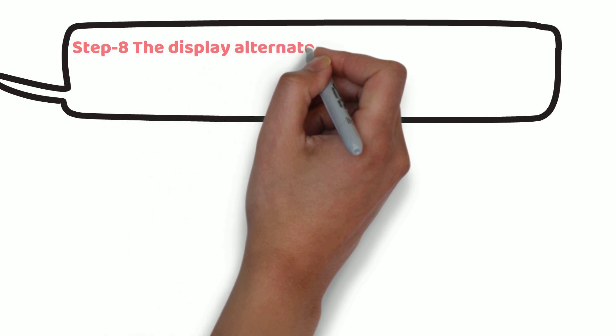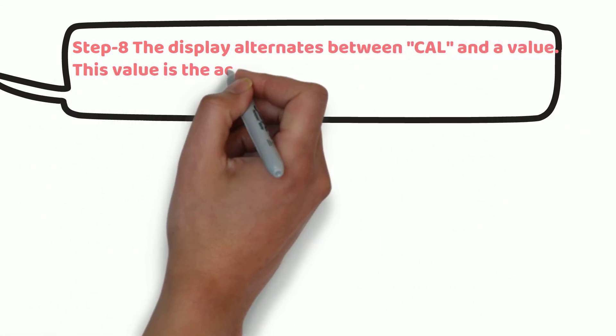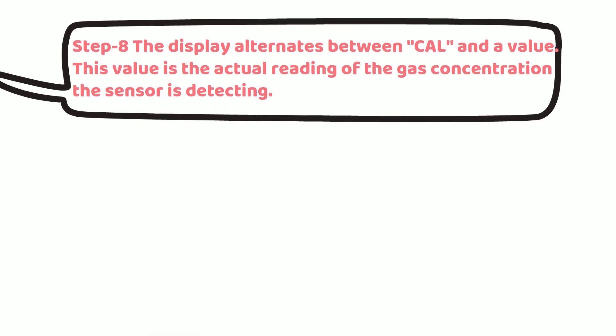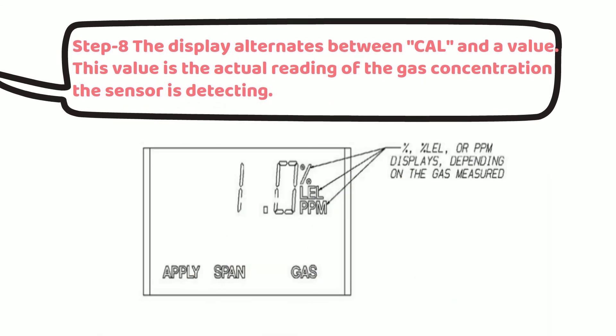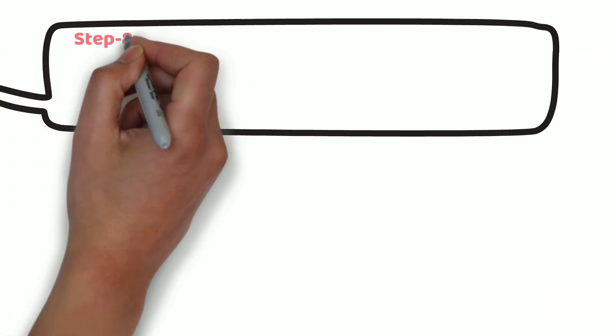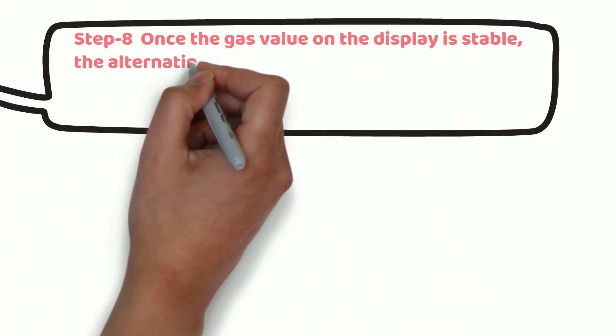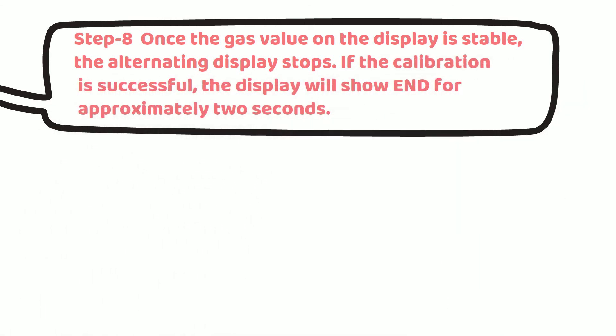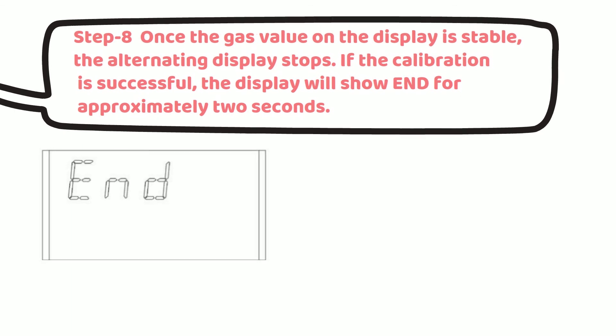The display alternates between cal and a value. This value is the actual reading of the gas concentration the sensor is detecting. Once the gas value on the display is stable, the alternating display stops. If the calibration is successful, then the display will show end for approximately 2 seconds.